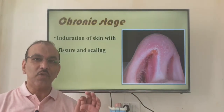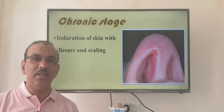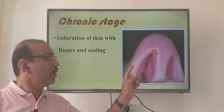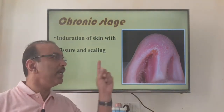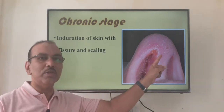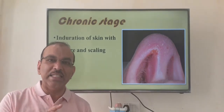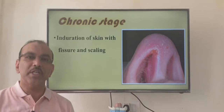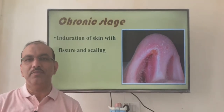In chronic nasal vestibulitis, the whole area inside and outside becomes crusty and scaly. So that is the presentation in the acute phase versus the chronic phase.